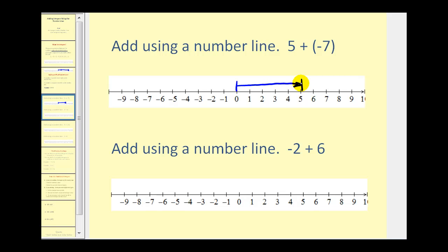And now from here, because we're adding negative seven, we're going to move left seven units. So if we move back five units, we're back at zero. We need to move two more units to the left. So this sum is equal to negative two.